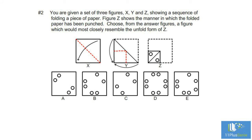Number two: you are given a set of three figures X, Y, and Z showing a sequence of folding a piece of paper. Figure Z shows the manner in which the folded paper has been punched. Choose from the answer figures the figure which would most closely resemble the unfolded form of Z. In figure X the paper has been folded on the diagonal from top right to bottom left. In figure Y the top left corner has been folded down and the right bottom corner has been folded to the left.